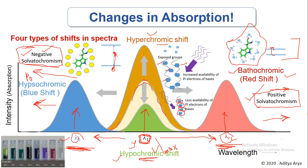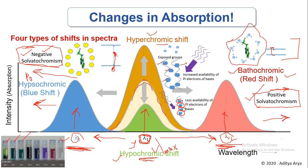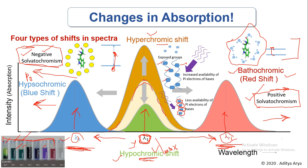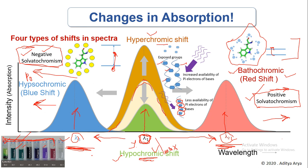These phenomena are observed in various molecules. For example, there is a dye dissolved in various solvents — dioxane, chloroform, acetone, ethanol, methanol — and the same dye shows different colors in each solvent. This happens because different solvents cause different absorption of light, resulting in different visible colors. These solvatochromic properties are important for biosensor development and can be helpful in developing color indicators based on spectrophotometric properties.